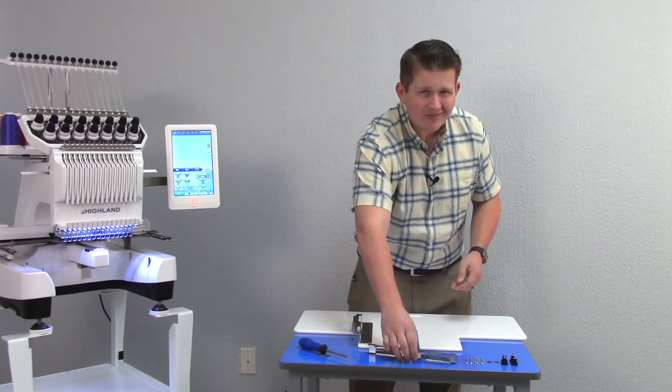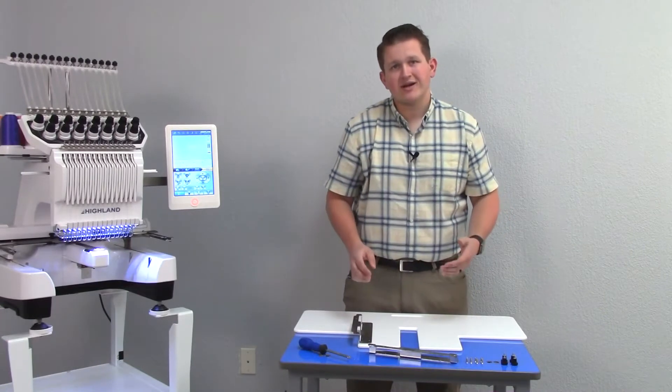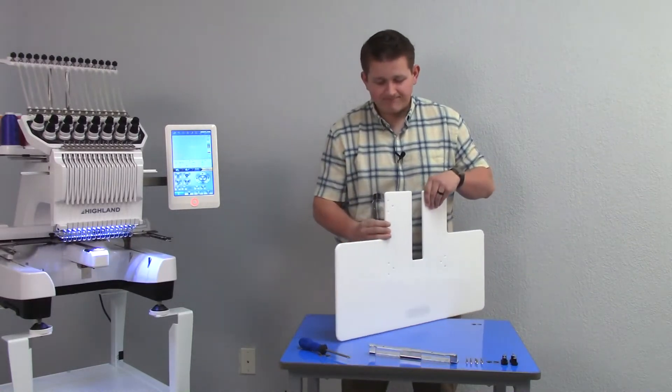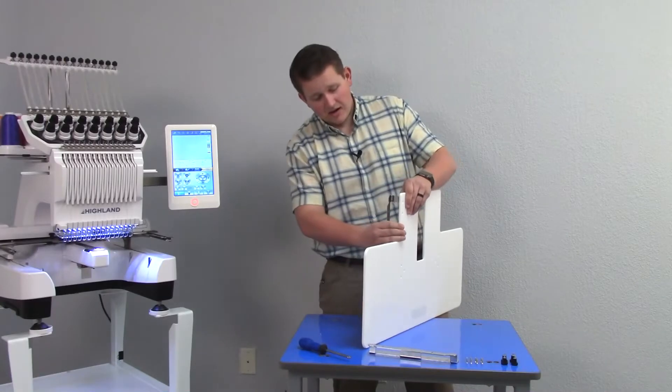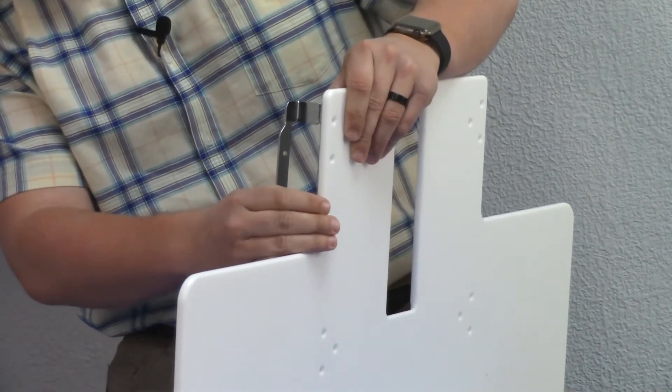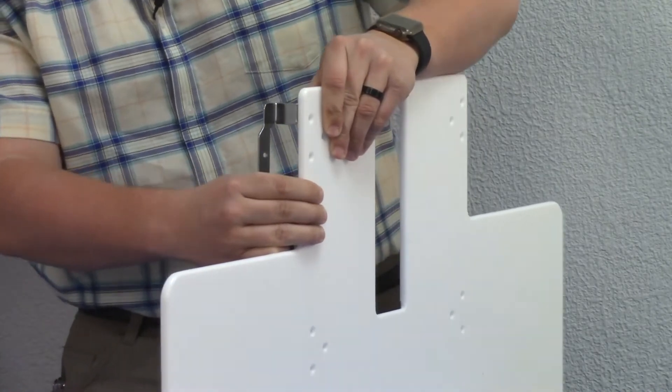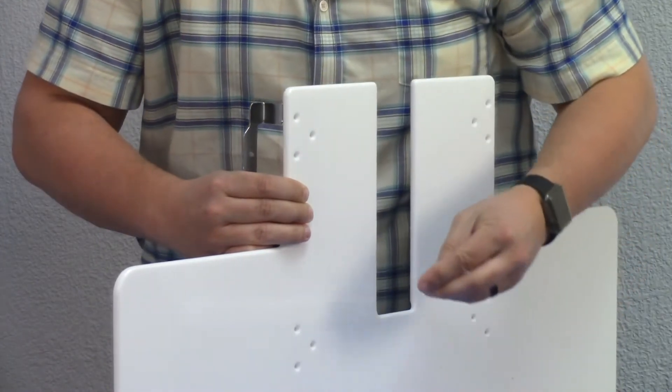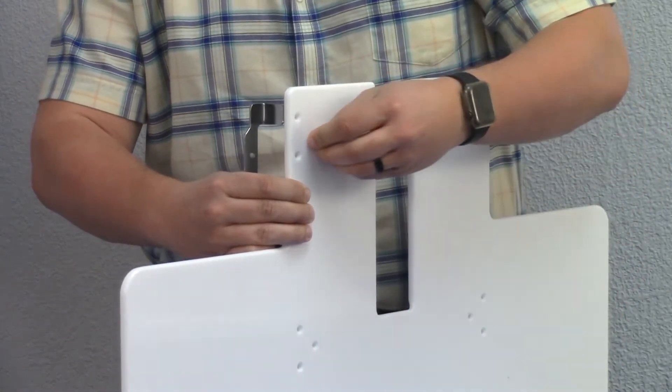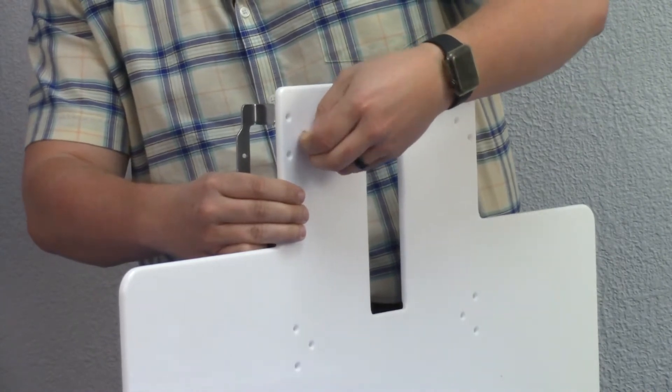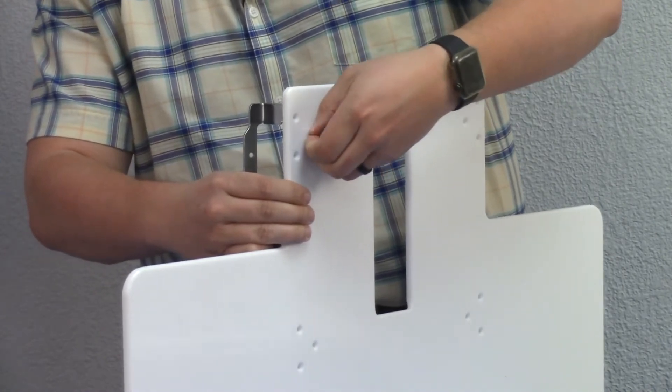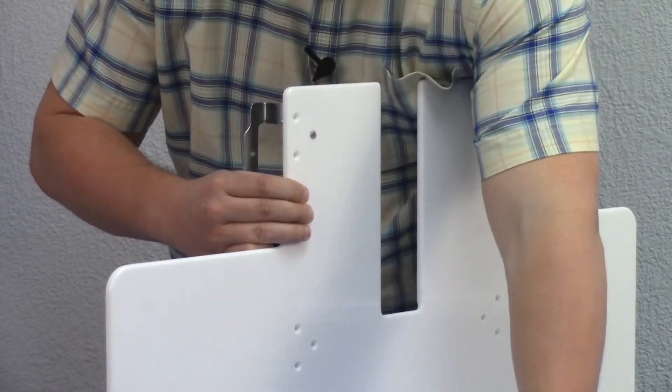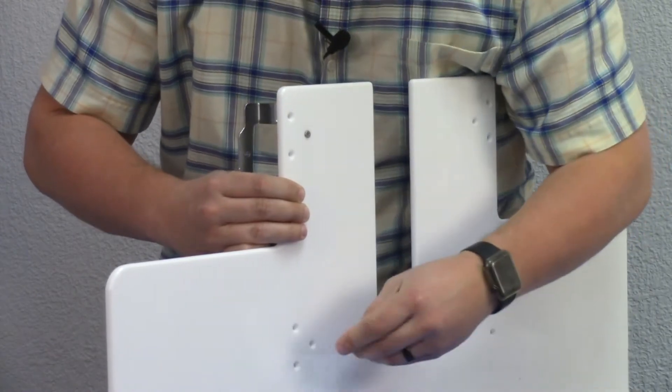Once I've determined where my brackets will be placed, I'm ready to start screwing them in. I'm going to lift my table up, and on the back here, I'll line up the holes on my bracket with the holes on the table. I'm going to grab one of my Phillips head screws and begin screwing it in from the top side into the bottom side of the table and my bracket. I just need to get it started so I can move on to my second screw.